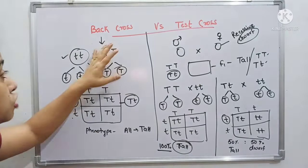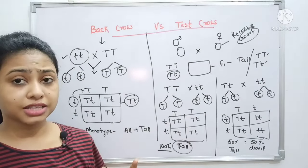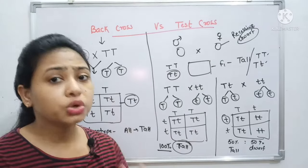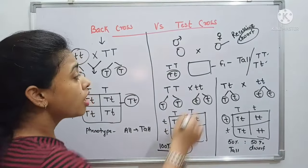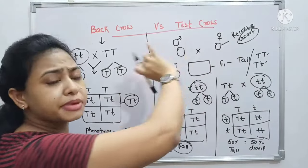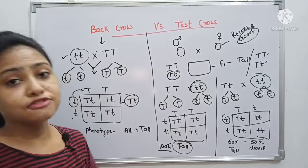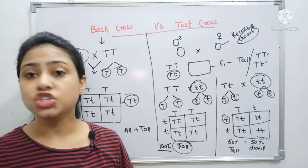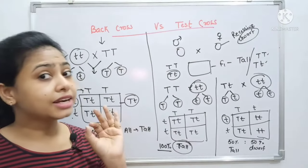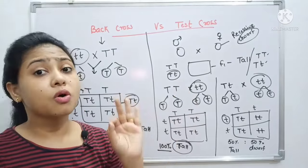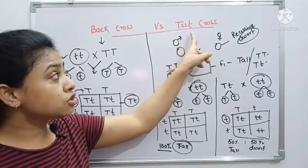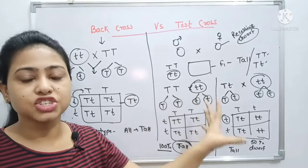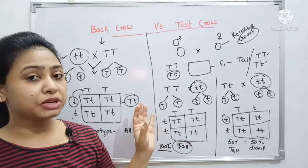So through back cross, we intentionally produce a desired progeny. In test cross, the unknown genotype of the F1 generation is determined by always crossing it with the homozygous recessive. On the basis of the result, we know the genotype. This is the difference between back cross and test cross. Note that test cross is also a type of back cross — these are manipulated crosses, not natural crosses.